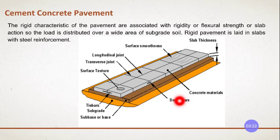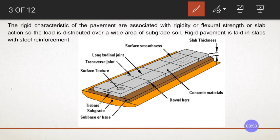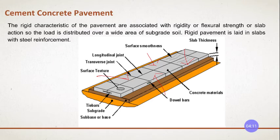The bar along the length of the road is called a dowel bar. When it is across or transverse to the road, the joint is called a transverse joint. These are the various parts of the RCC pavement. Once it is laid, we lay it in different sections — first one section, then the alternate one, and so on. We will see how the laying is done in the coming class.